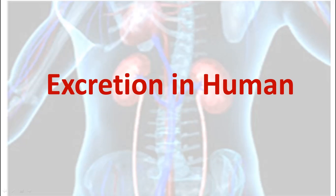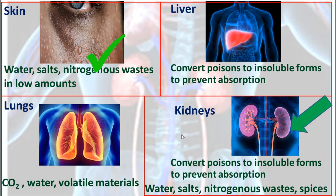Hello, good morning, my dear students. Today we are going to continue talking about excretion in humans. Last time we talked about excretion in humans through the skin, and we talked about the structure of the skin and the sweating. Today we are going to discuss the second organ, and the most important organ in the excretory system of humans, which is the kidneys, or in general, the urinary system.